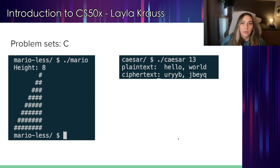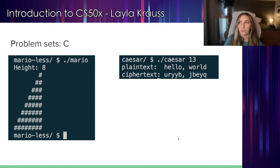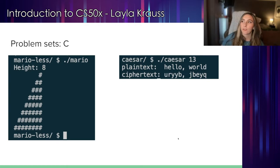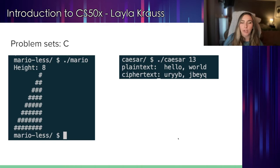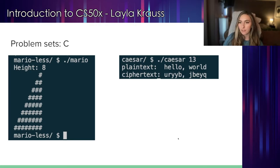More problem sets. C is used a lot in this course at the beginning, and a lot of the applications you'll be making use the command line. On the left, there's a problem set called Mario, where you enter a value and it prints out that many hashes representing bricks, kind of like in Mario. And then on the right, you have Caesar, which uses a simple encryption process — you provide a key, in this case 13, you provide some text like 'hello world,' and it will print out that text once it's been encrypted.